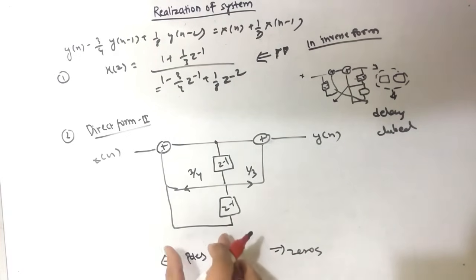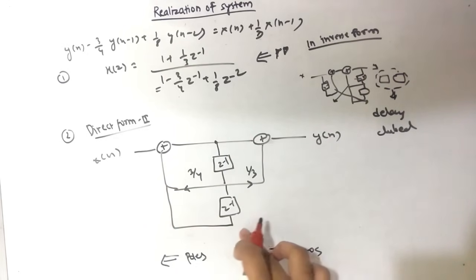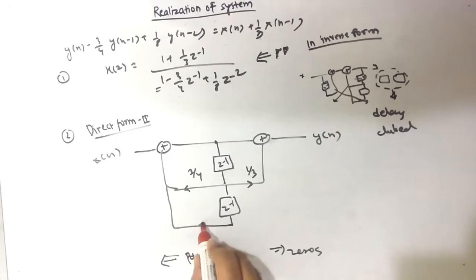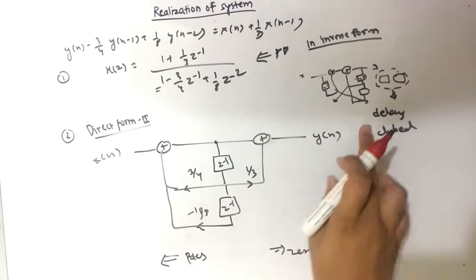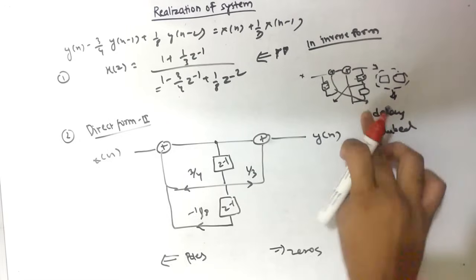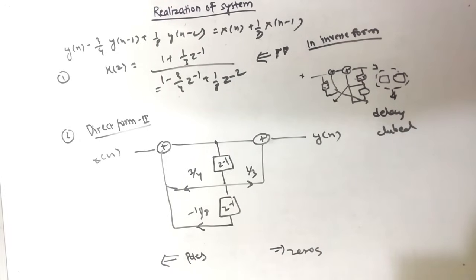We need a second Z⁻¹ to obtain the Z⁻² term. In the pole part we have a Z⁻² term, but in the zero part we do not. So at this second delay node we write the coefficient -1/8 (taken from Direct Form 1). This completes our Direct Form 2 structure.